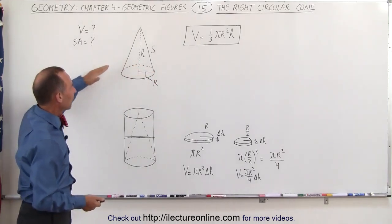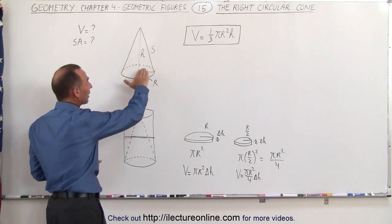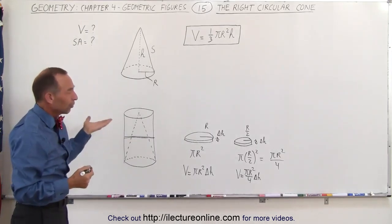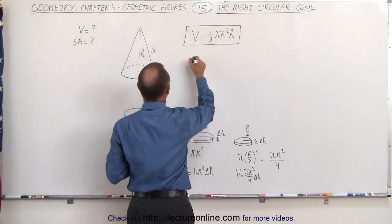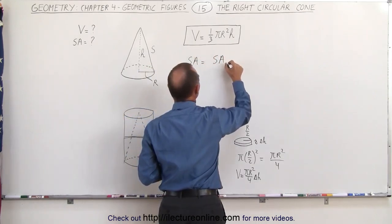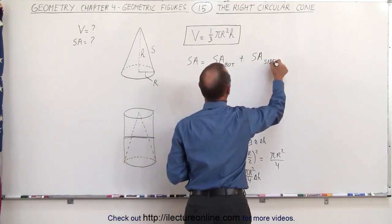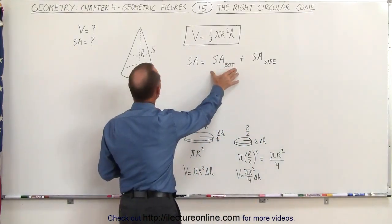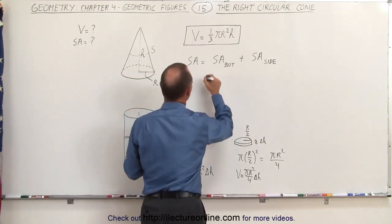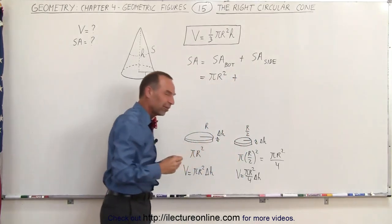Now we want to find the surface area of this right circular cone, which equals the surface area of the bottom plus the surface area of the side. The surface area of the bottom is easy — it's simply the area of a circle, pi R squared. But how do we find the surface area of the side?